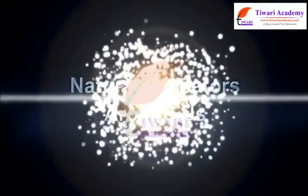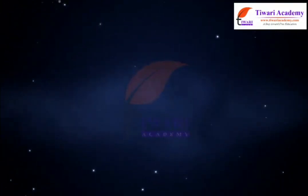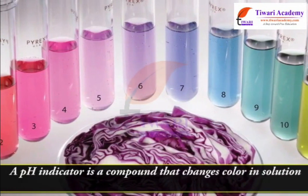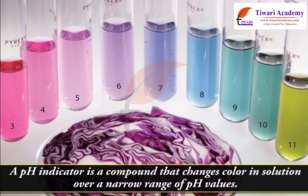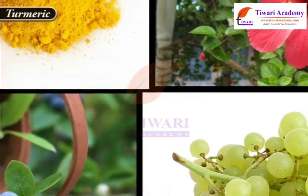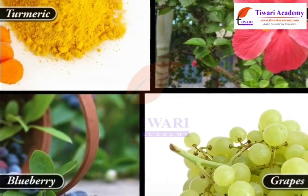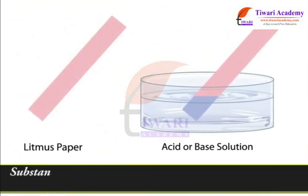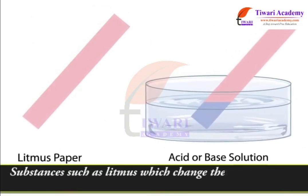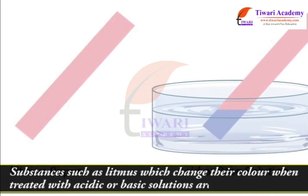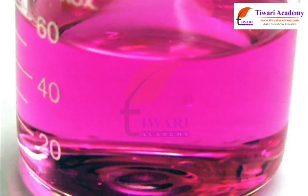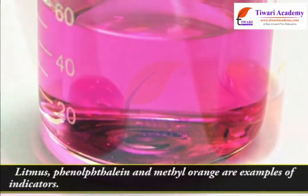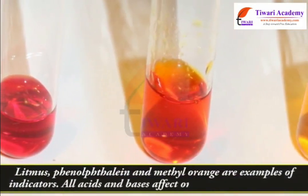Natural indicators around us: a pH indicator is a compound that changes color in solution over a narrow range of pH values. Turmeric, China rose, blueberries, and grapes are some examples of natural indicators. Substances such as litmus which change their color when treated with acidic or basic solutions are called indicators. Litmus, phenolphthalein, and methyl orange are examples of indicators. All acids and bases affect one or the other indicator.